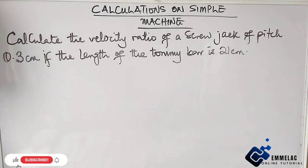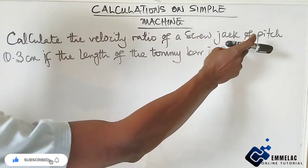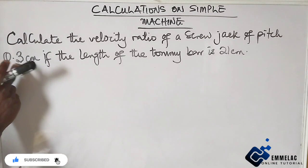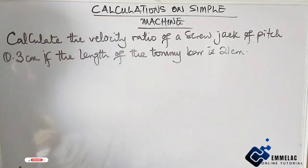Welcome to Emmelac Online tutorial. Before us is this question on simple machines that says: calculate the velocity ratio of a screw jack of pitch 0.3 cm if the length of the tommy bar is 21 cm.